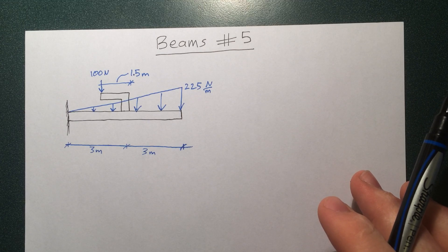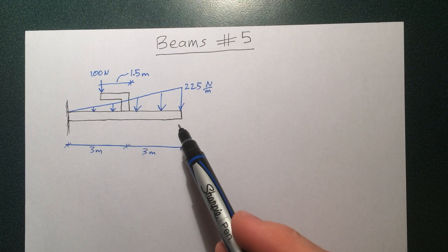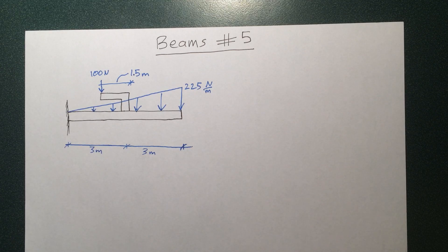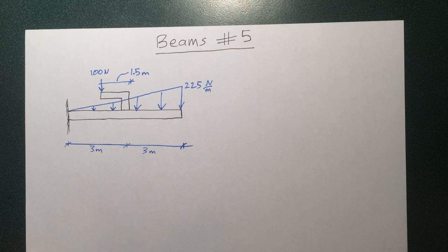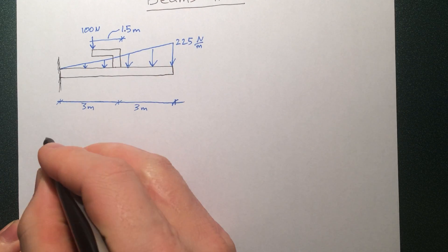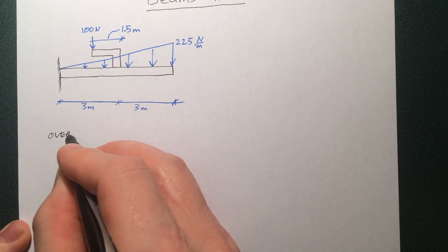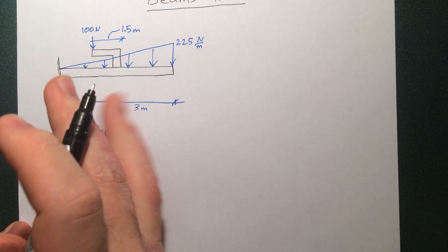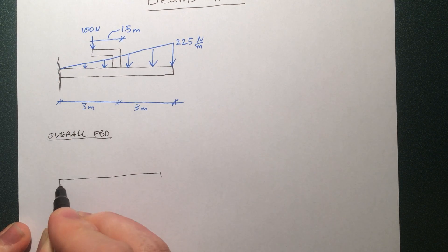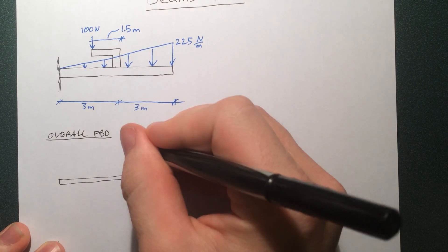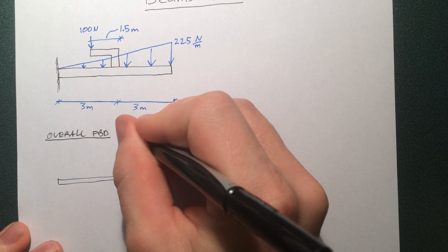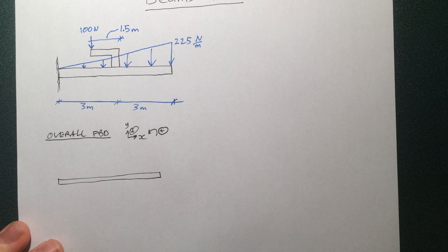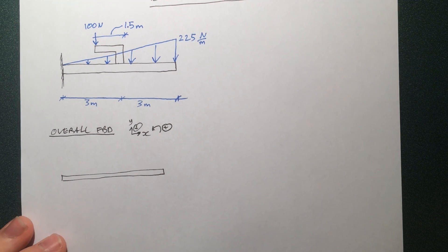So like you need to do with any beam problem, the first step to analyzing something to get its bending moment and shear force diagrams is to find the reactions at the support. The way you do that is by making an overall free body diagram and analyzing it. I'll leave it at this for now.